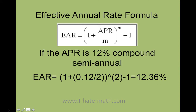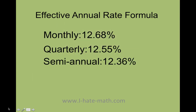Also semi-annual, the m is going to be 2 because you're compounding twice a year. And finally, when you look at the effective annual rate: monthly was 12.68, quarterly 12.55, semi-annual 12.36.